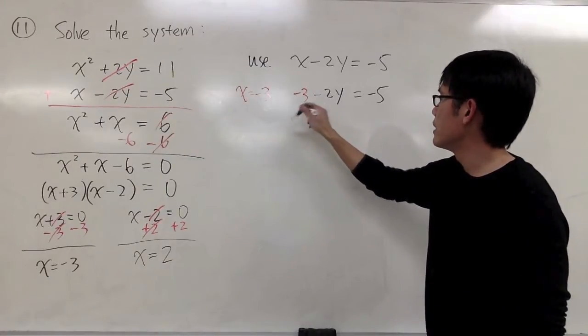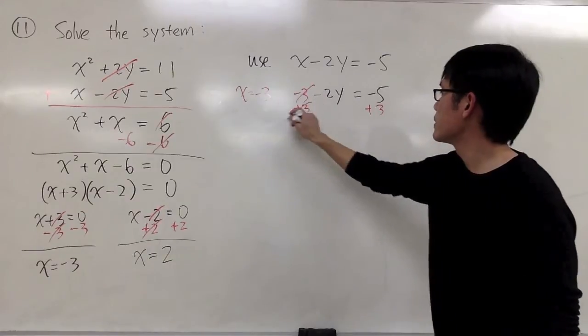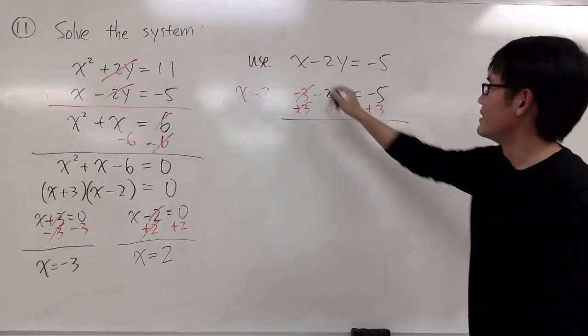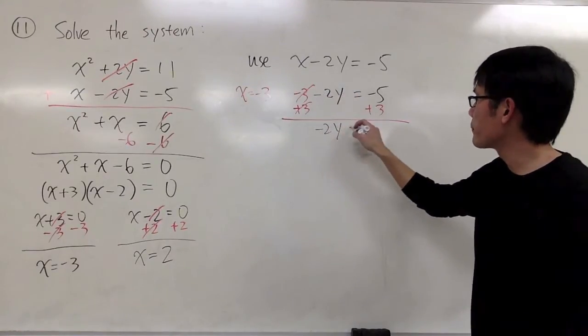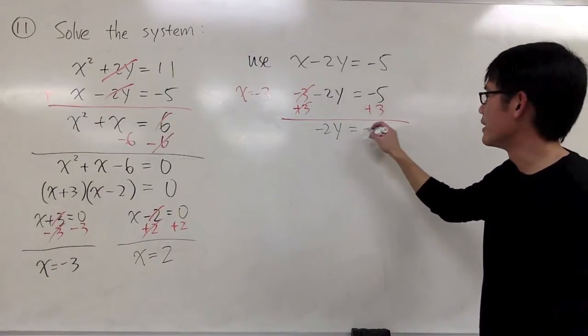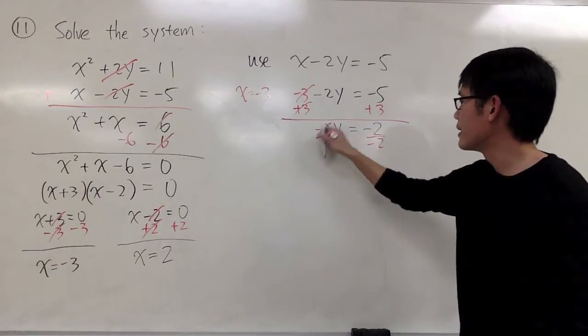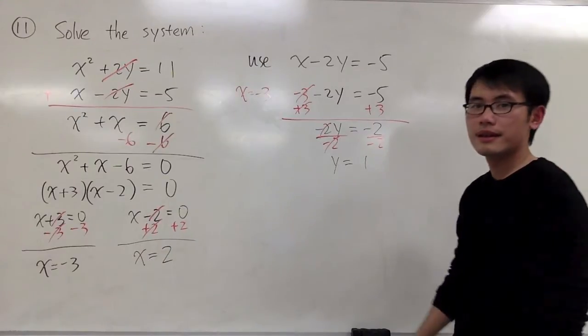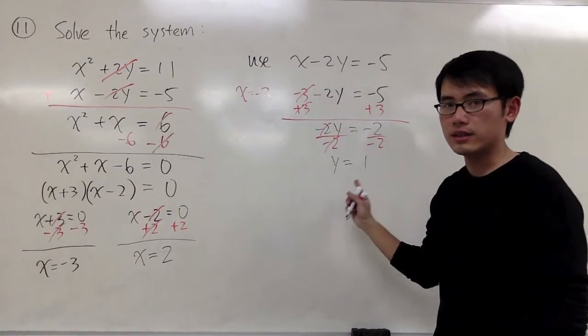So we can add 3 on both sides. Cancel this out. I get -2y = -5 + 3, which is -2. And divide both sides by negative 2. I get y = positive 1.